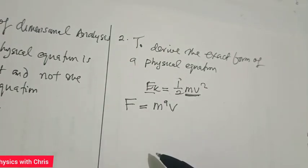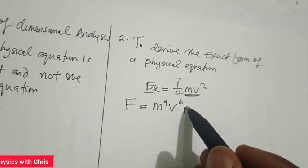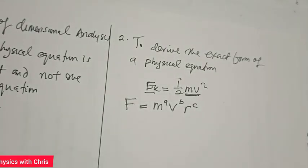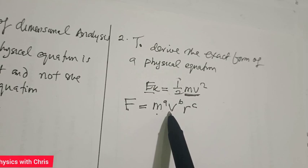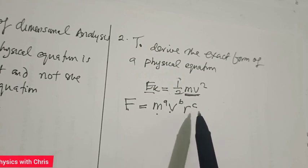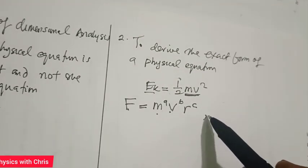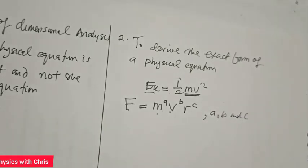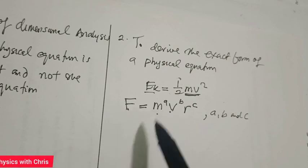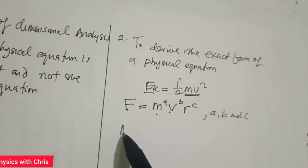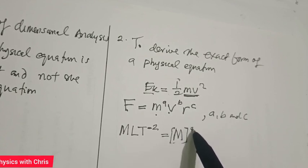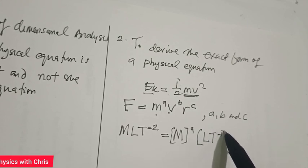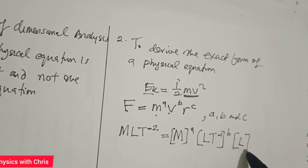Suppose the centripetal force acting on a body moving in a circle is given by F = m^a × v^b × r^c. We want to know the exact form — how does the force depend on mass, speed, and the radius of the circular path? We can use dimensional analysis to derive this. Substituting dimensions: the dimension of force is MLT⁻², mass is M^a, speed is (LT⁻¹)^b, and radius is L^c.